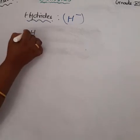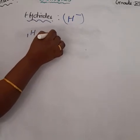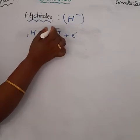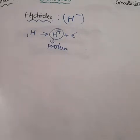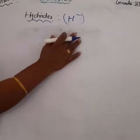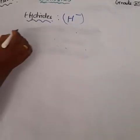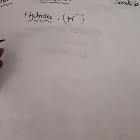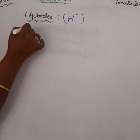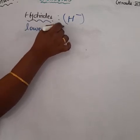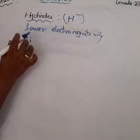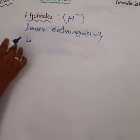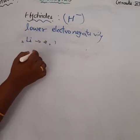Hydrogen has only one electron in its outermost shell, so hydrogen generally tries to lose this one electron to become a cation — that is, H plus, a proton. But when hydrogen forms a compound with an element with lower electronegativity, it forms a hydride ion, H minus.